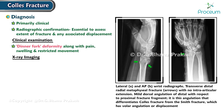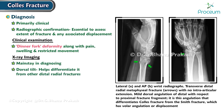X-ray imaging is the mainstay in diagnosing a Collis fracture. The dorsal tilt seen in this fracture helps differentiate it from other distal radial fractures.